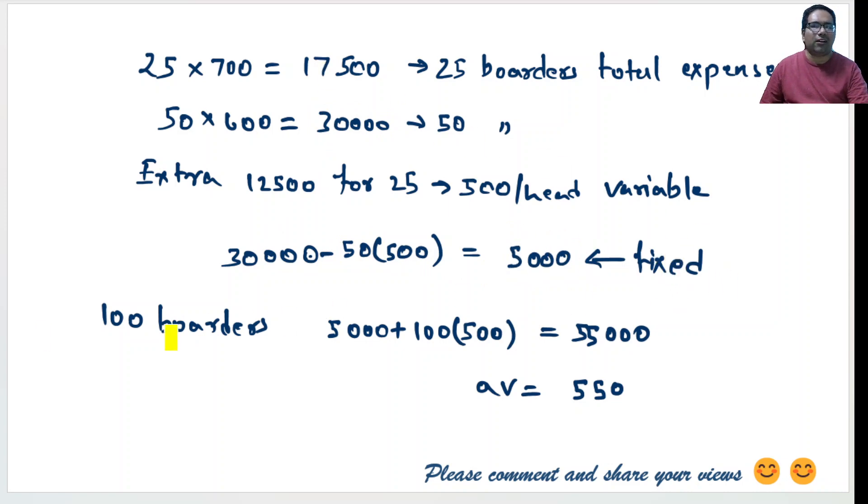Now when there are 100 people, what is the total cost? This 5,000, whatever is the fixed cost plus 100 into this variable cost. What is the variable cost? Which is 500 per head. 100 into 500 which is 50,000 plus 5,000, 55,000. What is the average then? Average is total 55,000 by 100 which is 550.